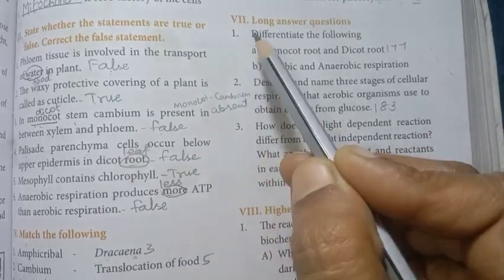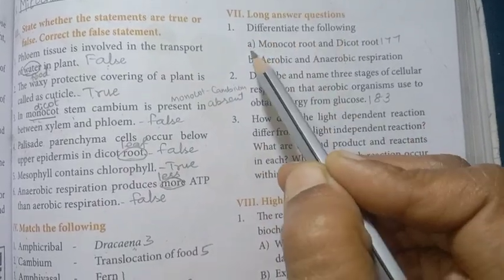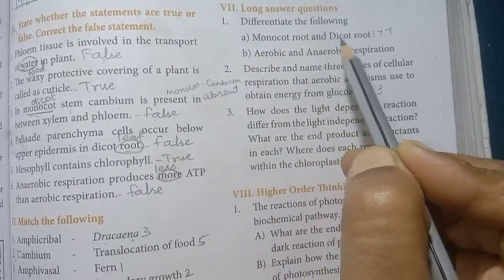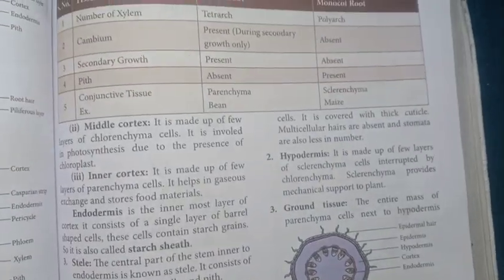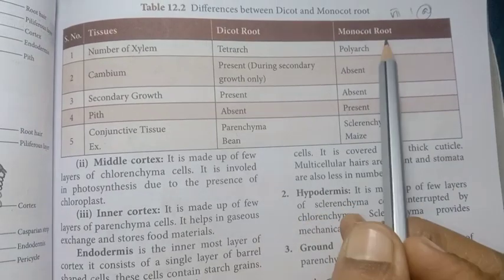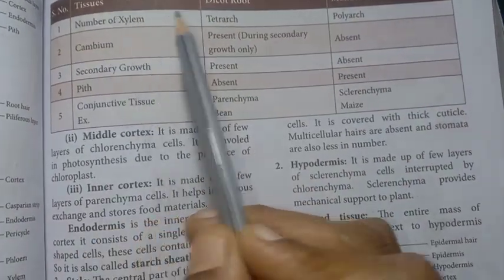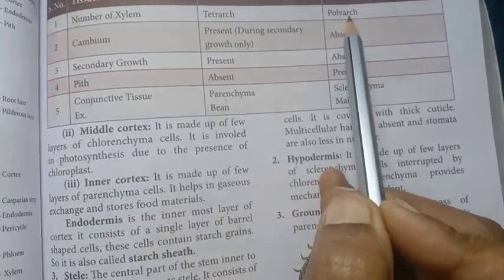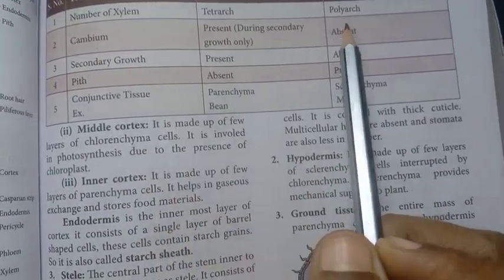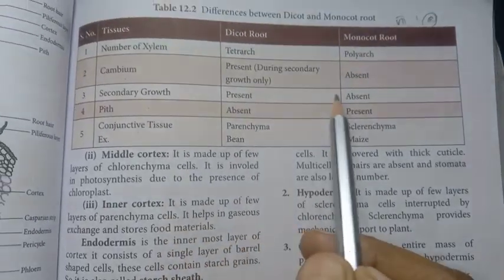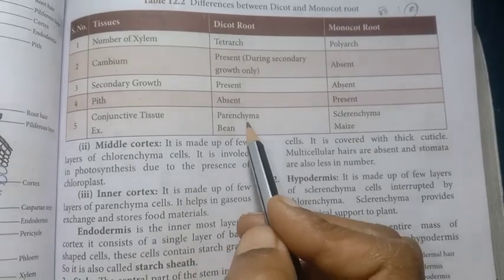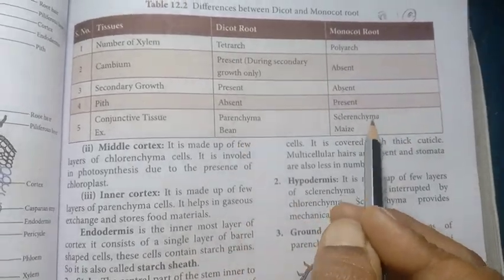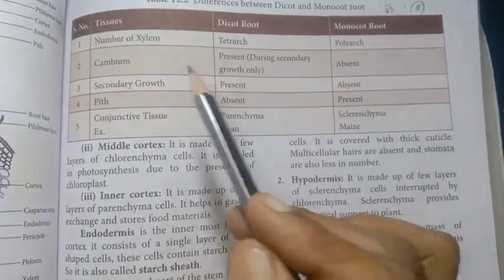Roman number seven: long answer questions. First: Differentiate monocot root and dicot root. Refer page number 177. Monocot root vs dicot root — number of xylem: polyarch vs tetrarch; cambium: absent vs present; secondary growth: absent vs present; pith: present vs absent; conjunctive tissue: parenchyma vs sclerenchyma. Example: maize.